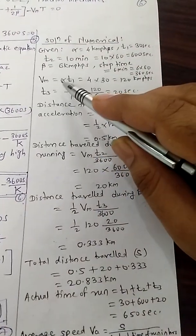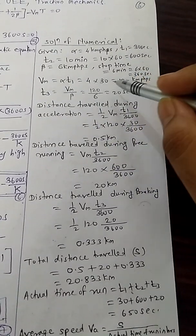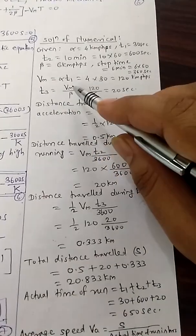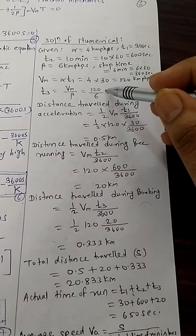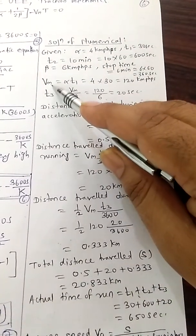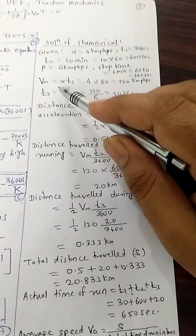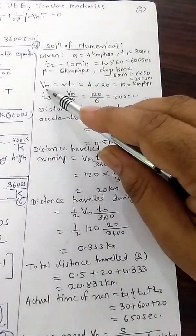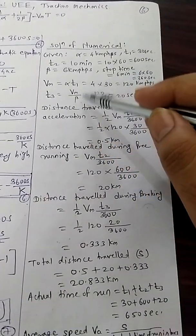Now Vm, that is maximum speed, can be calculated with the help of this formula that is alpha T1. So 4 into 30, that is 120 kmph. T3 is nothing but Vm upon beta, so 120 upon 6, that is 20 seconds. Please remember these two formulas Vm and T3. You know that acceleration is nothing but rate of speed, so speed upon time you can get acceleration.